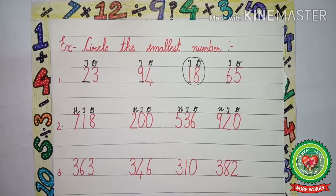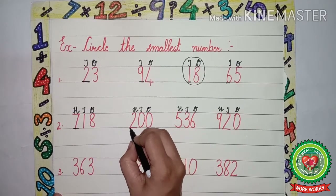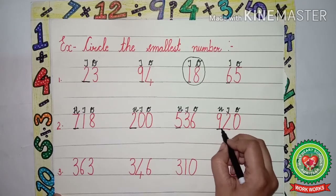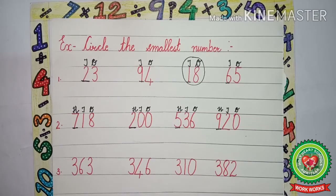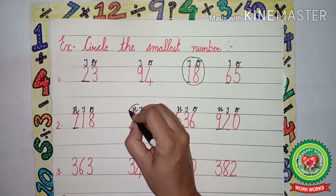We will underline the first digit of each number: 7, 2, 5, 9. Among all, which one is the smallest? 7? No. 5? No. 9? No. 2? Yes. So 200 is the smallest number, and we will circle 200.